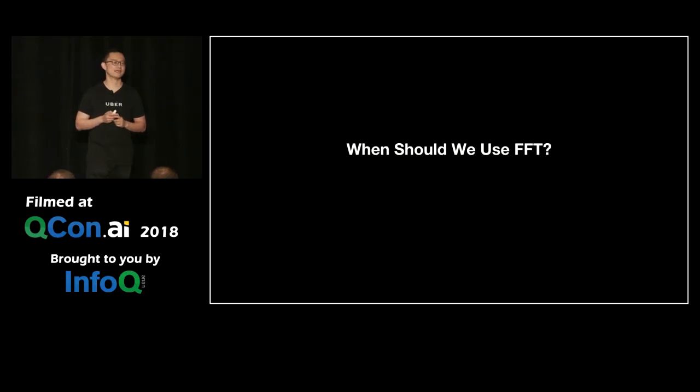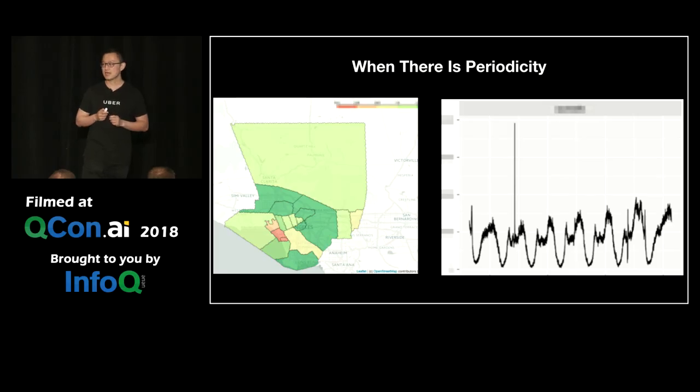When should we use FFT? One is when there is periodicity. On the right-hand side, we divide our cities into large areas. Each area has enough number of trips, rides and drivers, supply and demand, and so forth. When we can aggregate data into certain quantity, we get right-hand side, which is a periodical function. We can apply this algorithm to achieve certain level of accuracy.